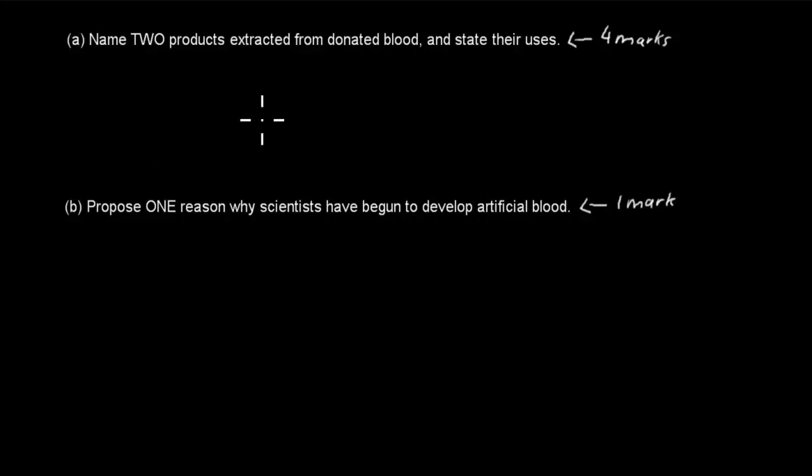So I'll read the actual question. It says: name two products extracted from donated blood and state their uses. That's worth four marks. And B, propose one reason why scientists have begun to develop artificial blood. That's worth one mark.